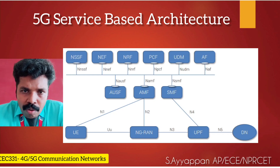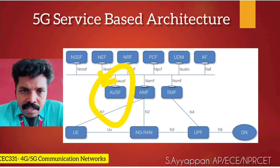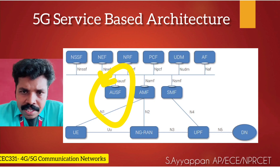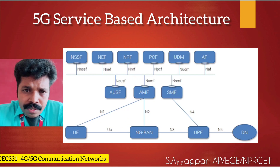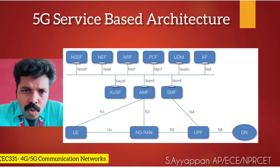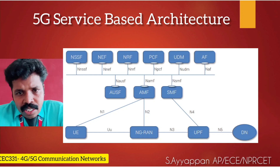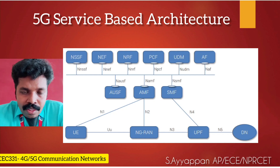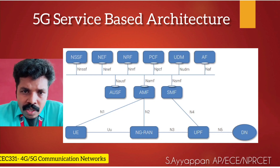We are going to talk about AUSF, which is called Authentication Server Function. As the name suggests, the Authentication Server Function is responsible for authentication of the end user and does so with the support of UDM. It gets the authentication data from UDM and provides the information to AMF so that AMF can complete the first level of authentication. Once AMF completes the first level, it passes the information to AUSF, and AUSF performs the second level of authentication. Once completed, the authentication procedure is finished. AMF always resides in the visited network, while AUSF and UDM always remain in the home network.